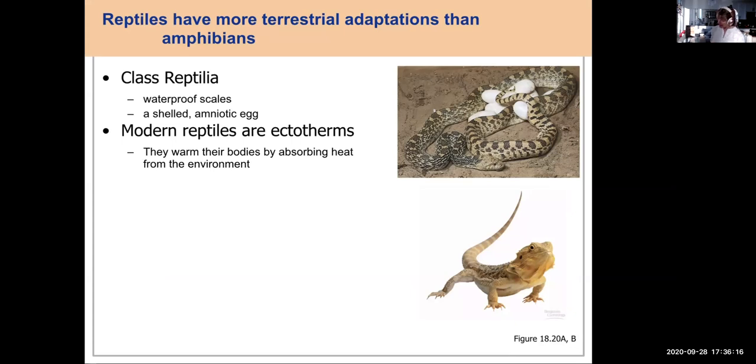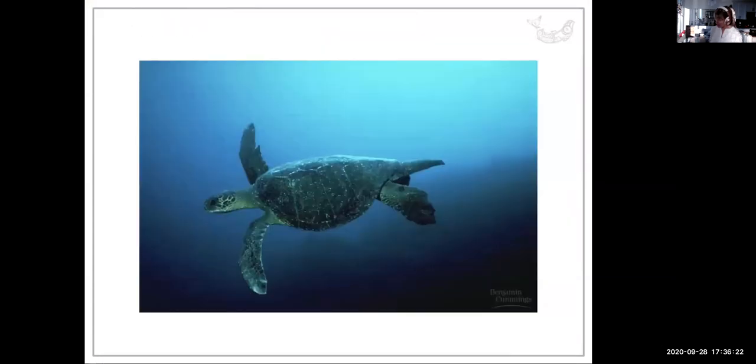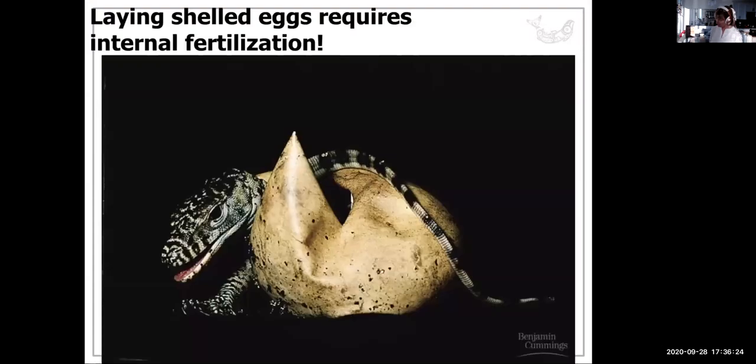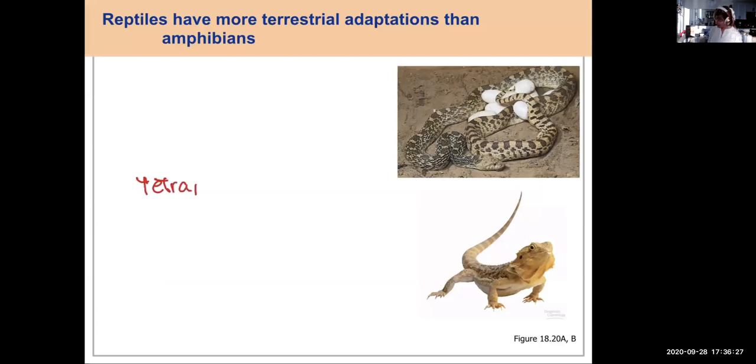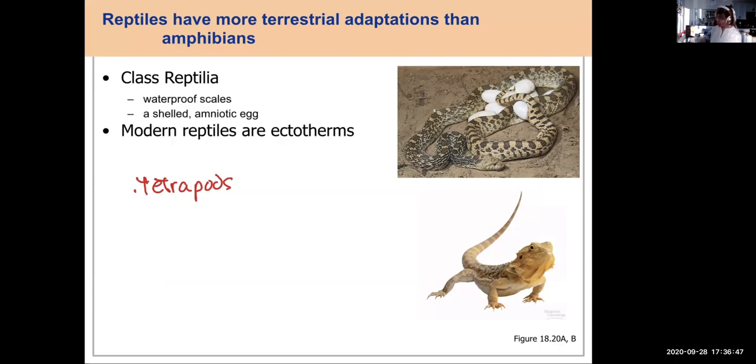Reptiles are tetrapods. So they have four limbs, two limbs in the front, two limbs in the back. What else do they have? A key adaptation. They have the scaly skin. We've already talked about that. Waterproofed scales. And they have four clades. So this is the classification these days.